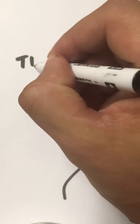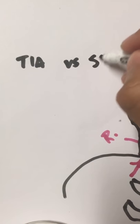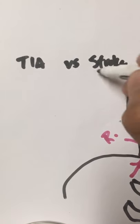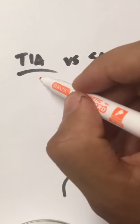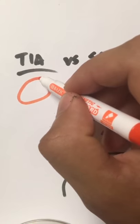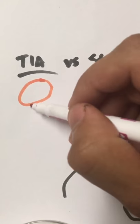The difference between a TIA versus an actual stroke I'll show you is that if you have the organ right here, let's say the organ is the brain, we'll draw them on both sides right here, and then you have the blood vessel that's leading to that organ.